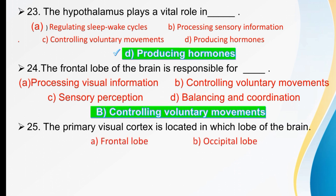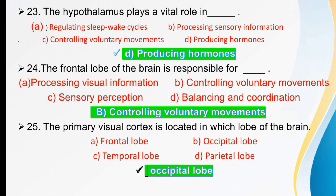The primary visual cortex is located in which lobe of the brain? Options are frontal lobe, occipital lobe, temporal lobe, or parietal lobe. The right option is occipital lobe — the primary visual cortex is located in the occipital lobe.